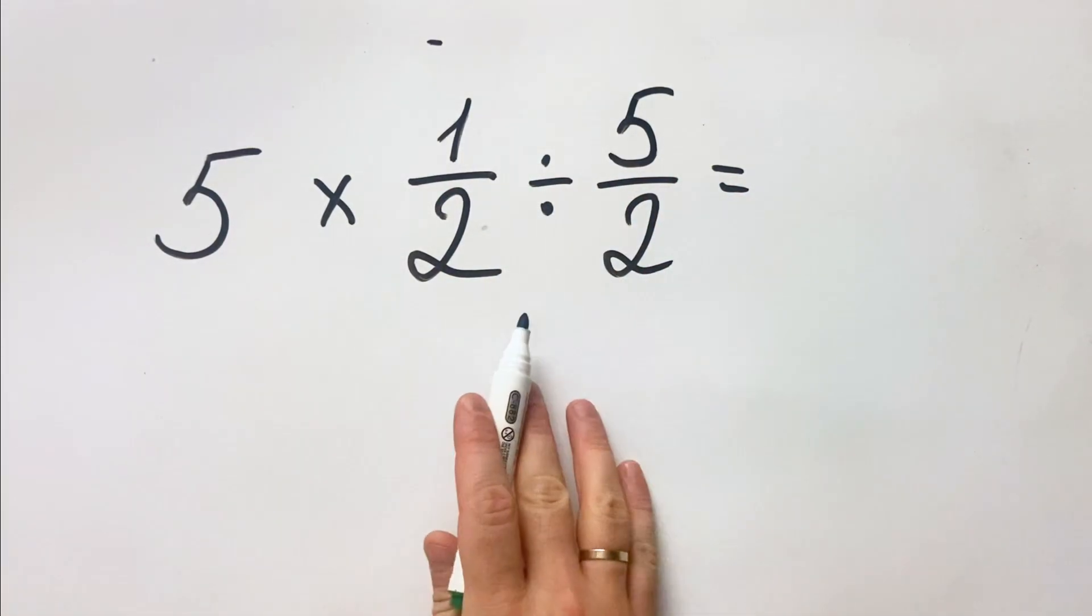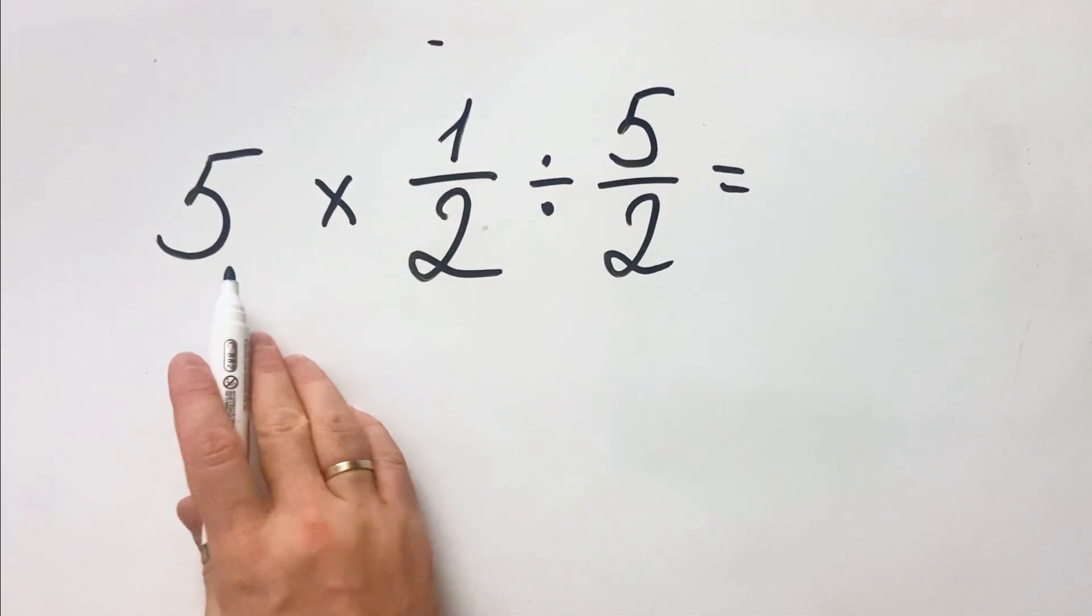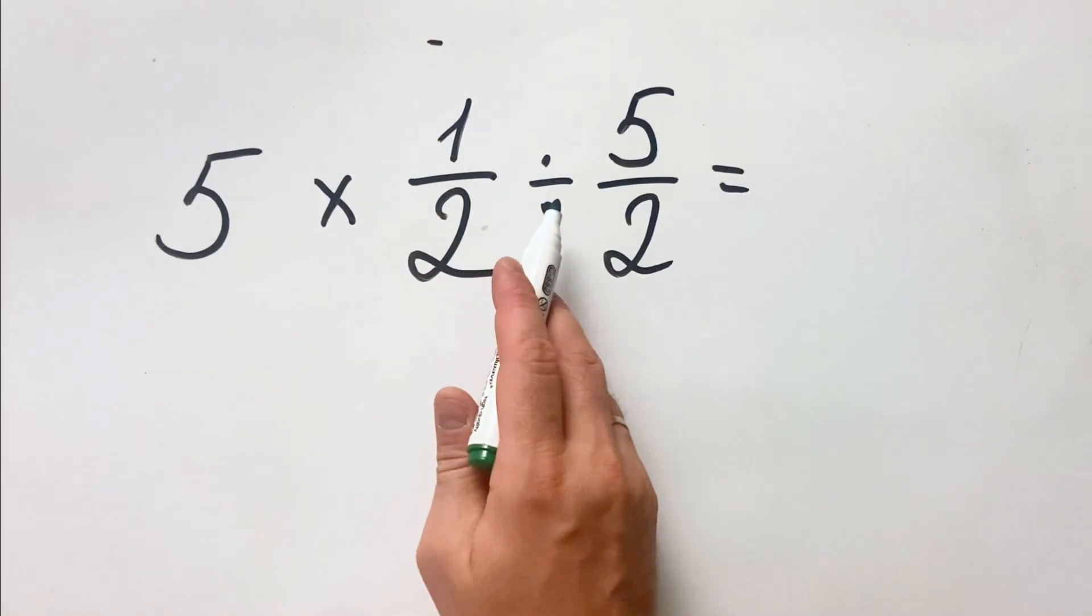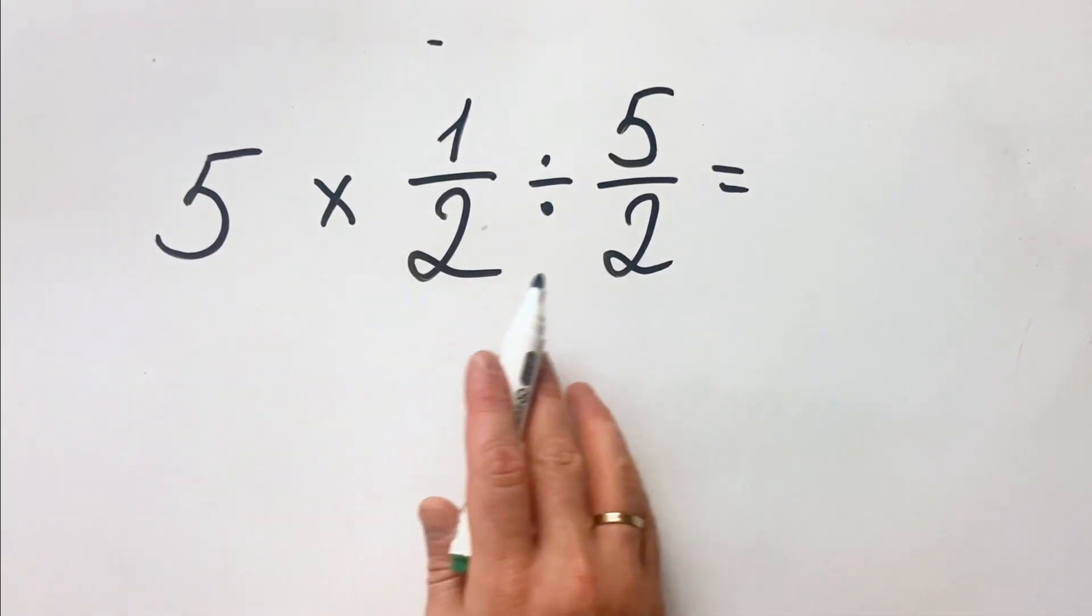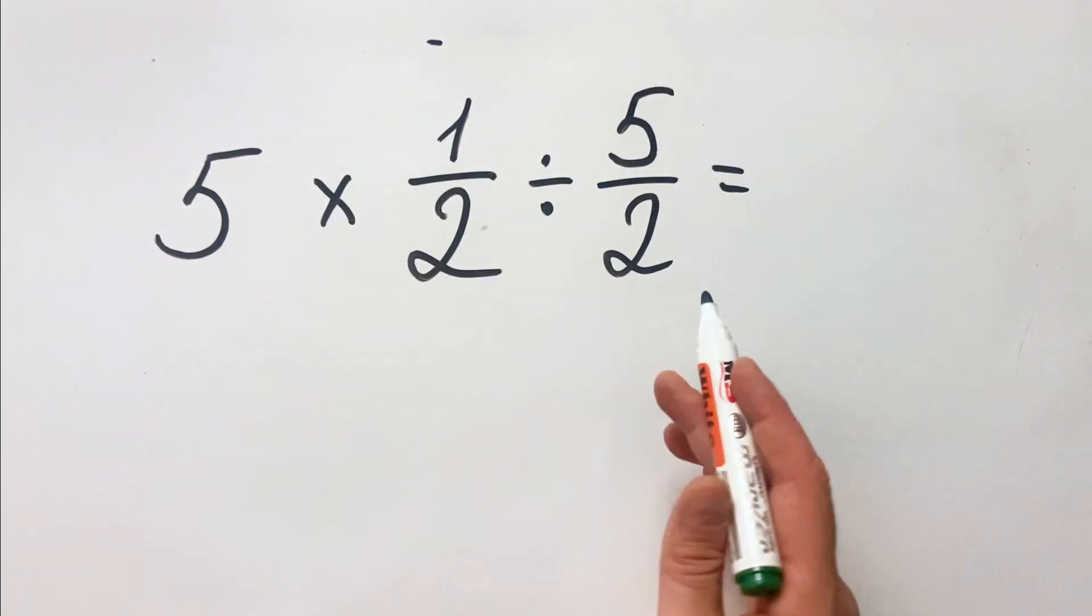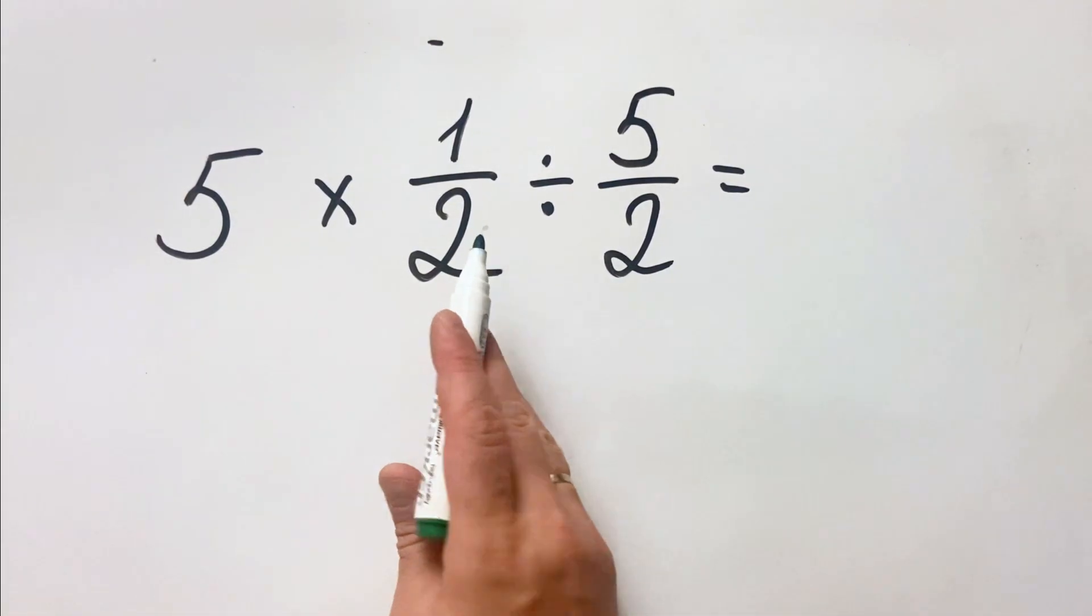Hello everyone, today we have this tricky equation: 5 multiplied by 1 over 2 divided by 5 over 2. To be able to solve this equation and not get confused by which one to do first...